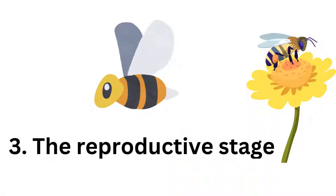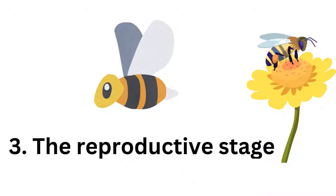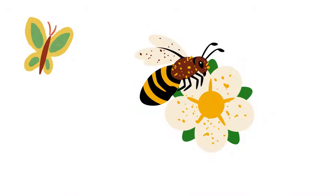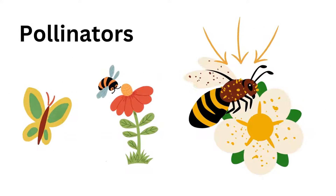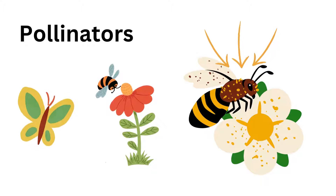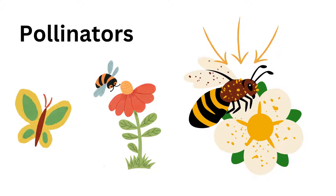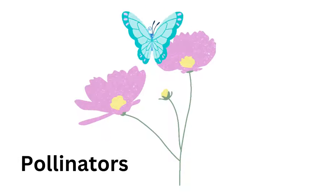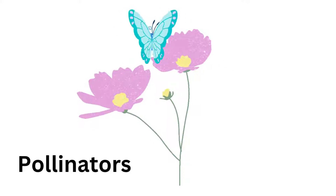The third stage is the reproductive stage, during which the plant produces flowers. Flowers are the reproductive organs of the plant and are responsible for producing seeds. They are usually brightly colored to attract pollinators such as bees and butterflies, who transfer pollen from the stamen of one flower to the pistil of another.